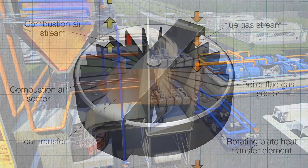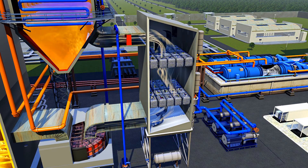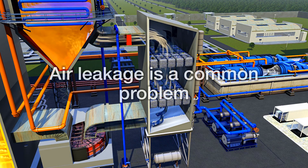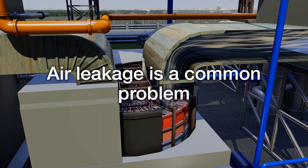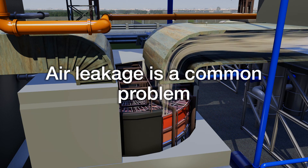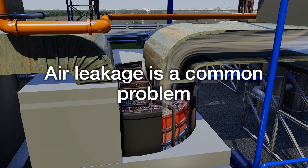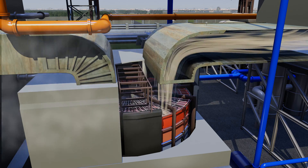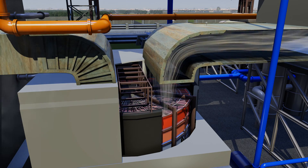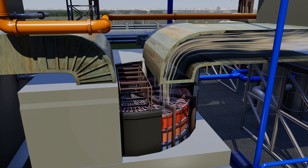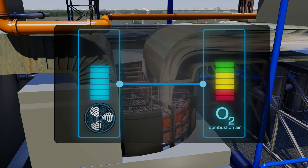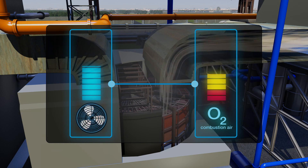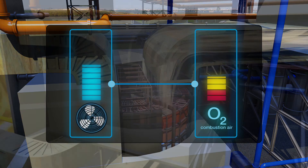In installations using rotary air preheaters, a common problem is air leakage caused by deterioration of the heater seals, which divide the sectors. Combustion air leaking across to the flue gas stream must be compensated for by an overall increase in the amount of air being moved by the forced draft, or FD fan.